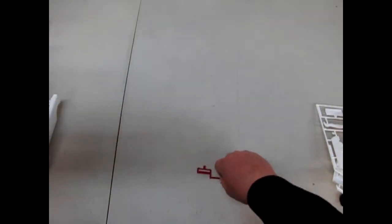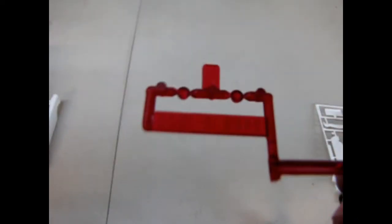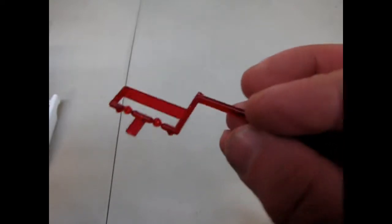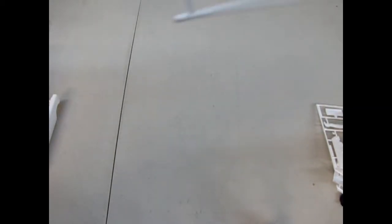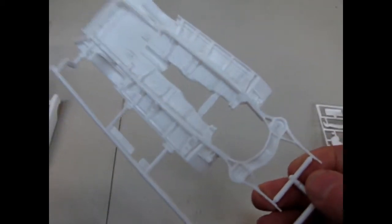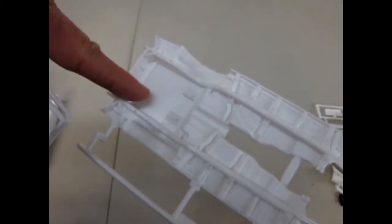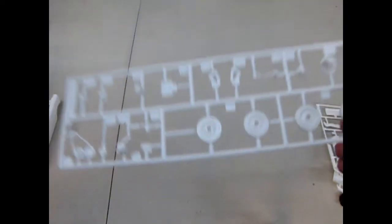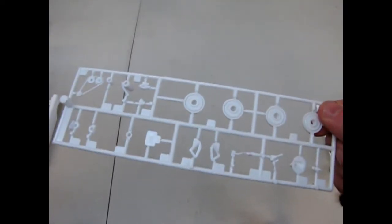There's our transparent red tail lights, just little guys, little dots. Nice chassis. Look at all that detail in there, very beautiful. There is a copyright mark right here, but I do believe it gets covered by the gas tank. There's our wheels, wheel backs.